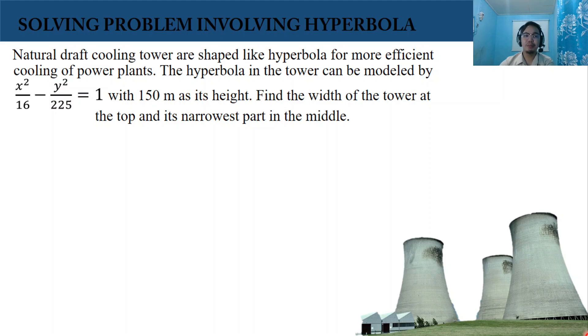Solving problem involving hyperbola. Natural draft cooling towers are shaped like hyperbola for more efficient cooling of power plants. The hyperbola in the tower can be modeled by x squared over 16 minus y squared over 225 equals 1.